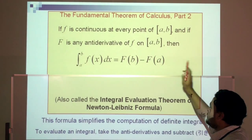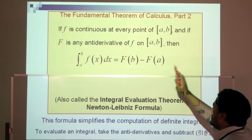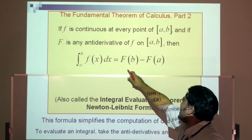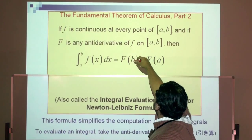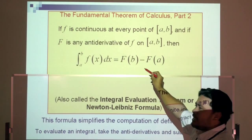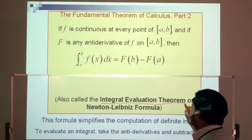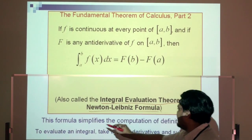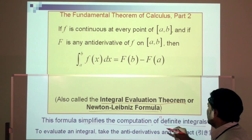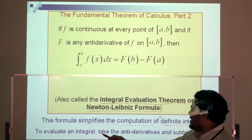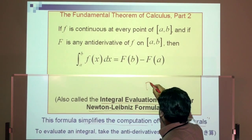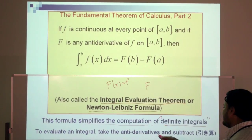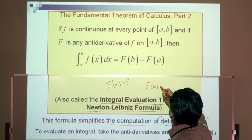FTC Part 2: if f is continuous on [a, b] and F is any antiderivative of f on [a, b], then the definite integral of f(x) with respect to x equals F(b) minus F(a) — the upper limit minus the lower limit. This is also known as the integral evaluation theorem or the Newton-Leibniz formula. It simplifies computation of definite integrals: take the antiderivative and subtract.